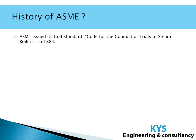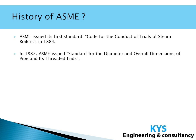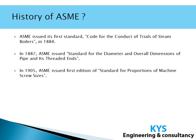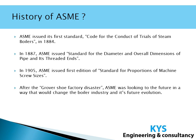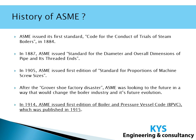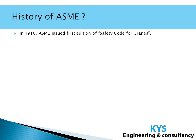After the founding of ASME in 1880, its first standard was issued in 1884: the code for conduct of trials of steam boilers. The SS Sultana accident had happened in 1865, ASME was founded in 1880, and in 1884 it came up with that code. In 1887, it issued a standard for the diameter and overall dimension of pipe and its threaded ends. In 1905 it came up with a standard for proportions of machine and screw sizes. After the Grover Shoe factory disaster in 1905, ASME came up with the first pressure vessel code, which was issued in 1914 and published in 1915. In 1916, ASME issued the first edition of the safety code for cranes.